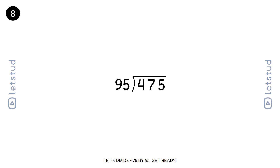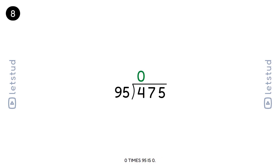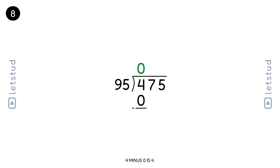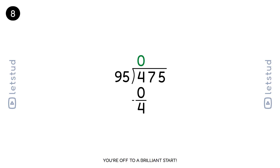Let's divide 475 by 95. Get ready. We start with the first digit, 4. 95 fits into 4 zero times. 0 times 95 is 0. 4 minus 0 is 4. You're off to a brilliant start.